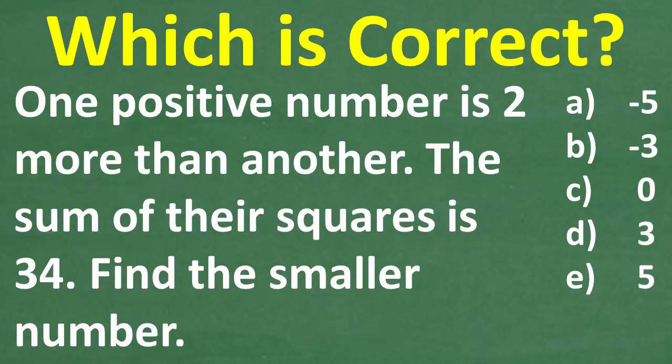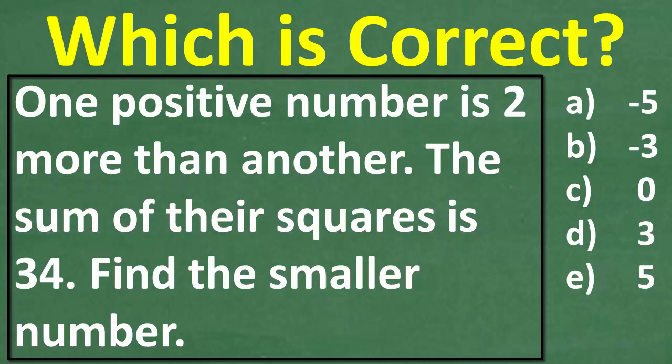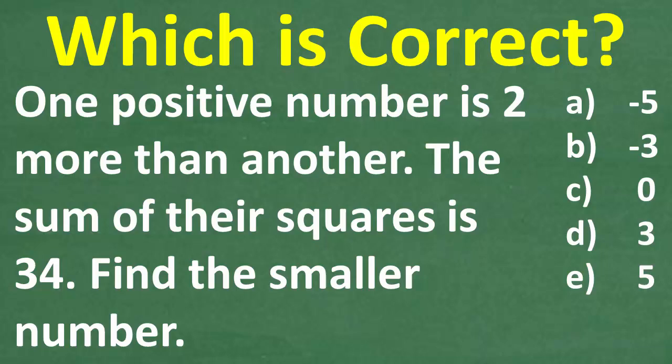So, which is the smaller number? Well, that's the question in this particular math problem. Let's suppose you encounter this problem on a math test or quiz. Could you get this thing right? Well, let's find out. Matter of fact, let me go ahead and read the problem. It says one positive number is two more than another. The sum of their squares is 34. Find the smaller number. And obviously, this is a multiple choice question.